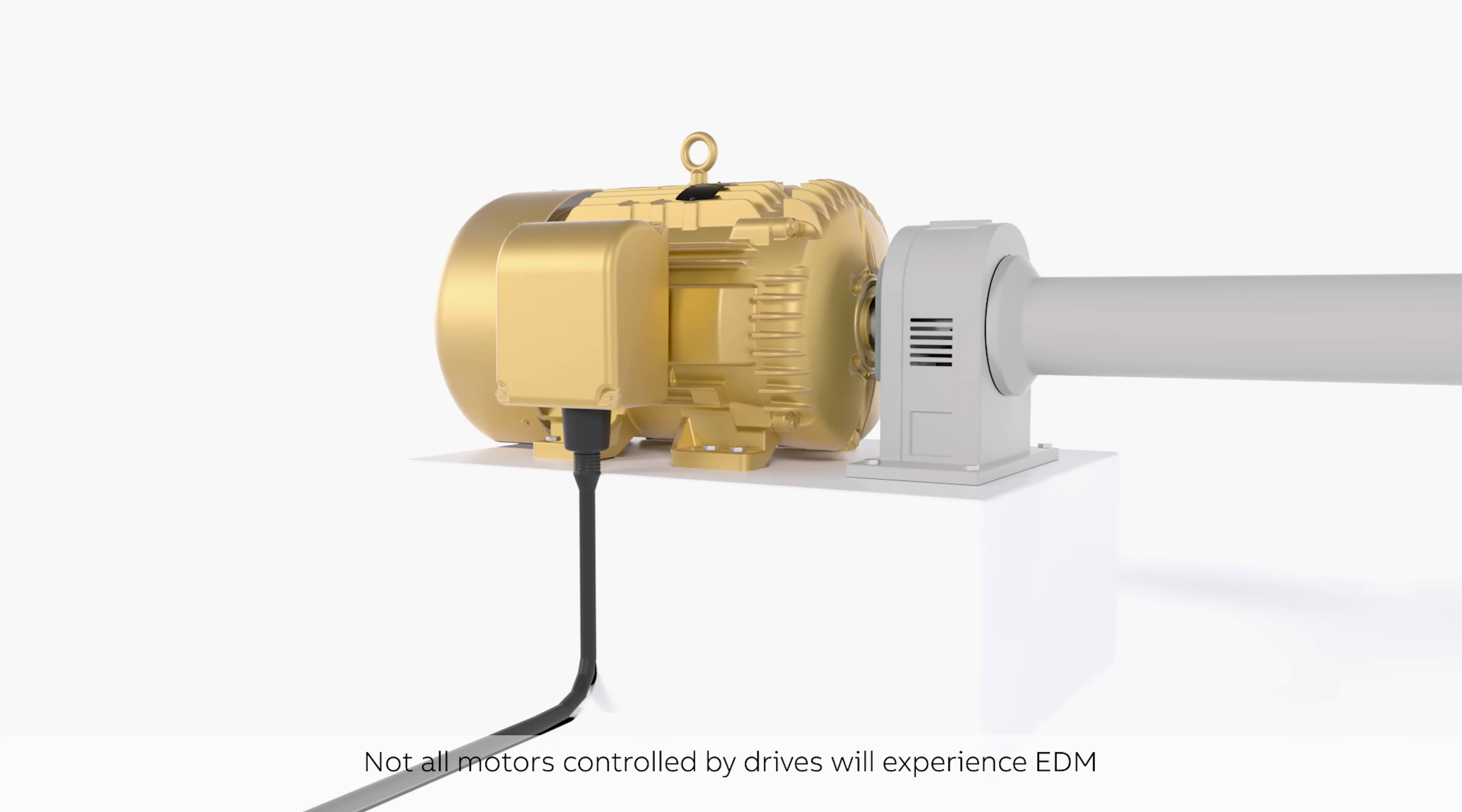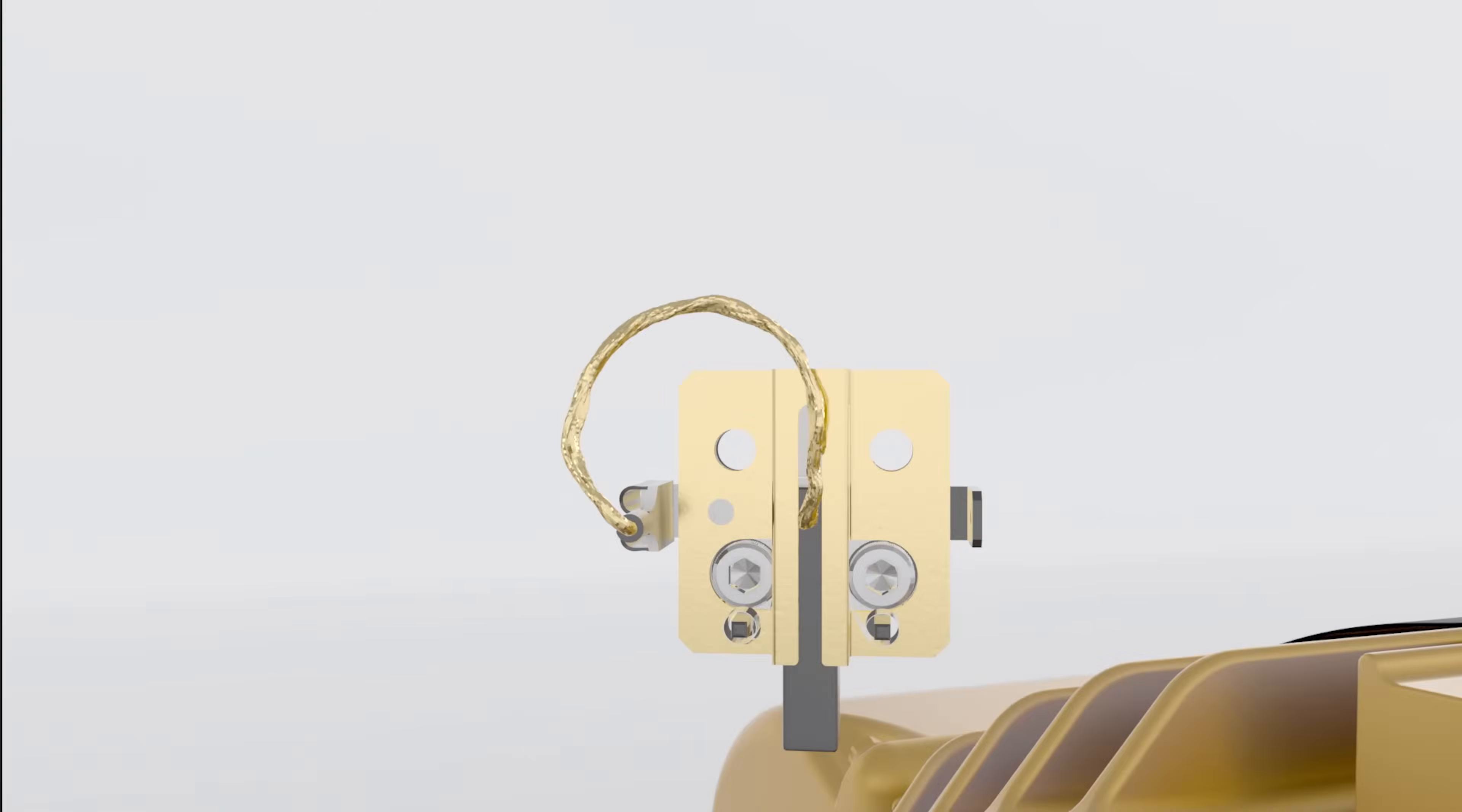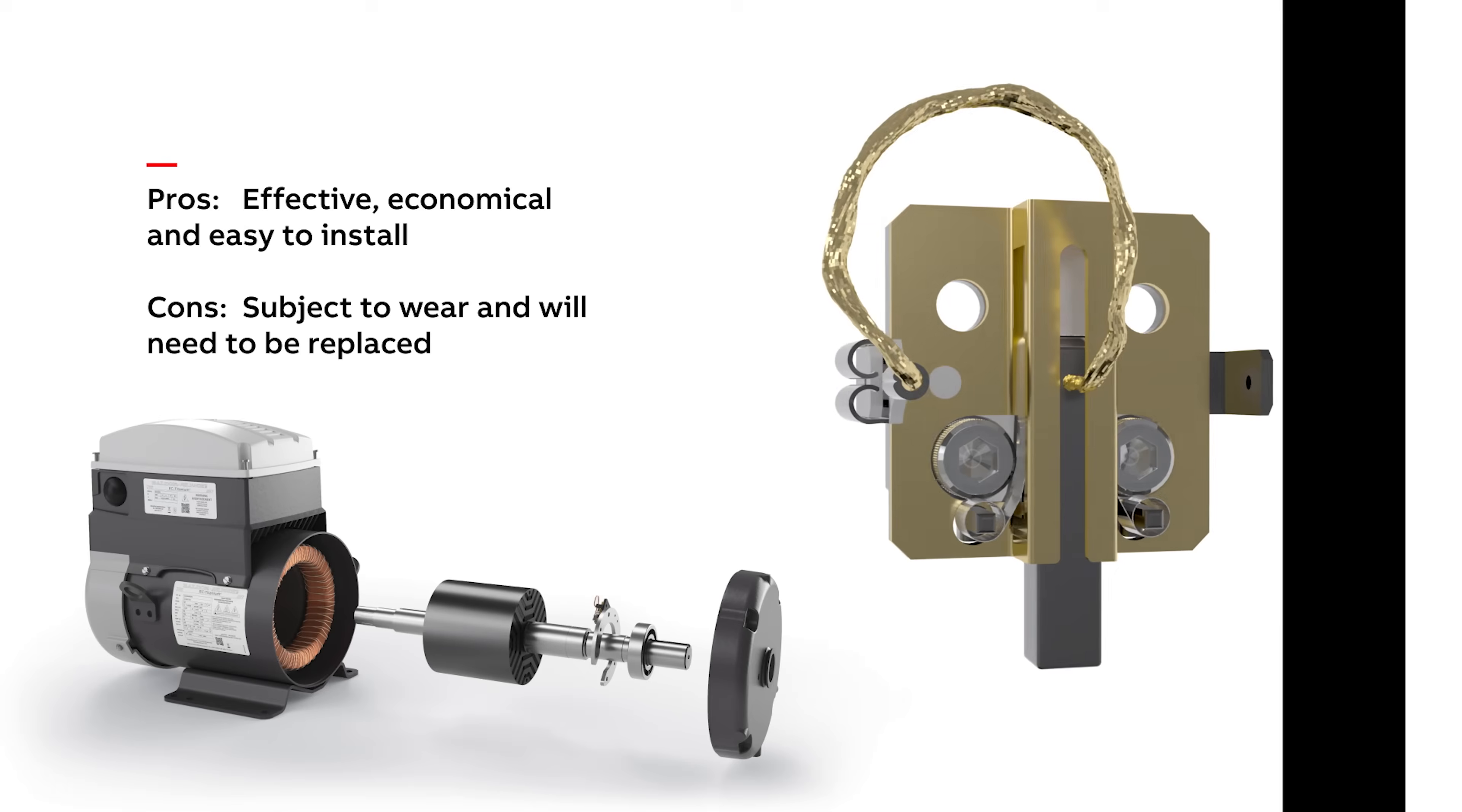Bearing protection from shaft currents can be done in a couple of ways. Shaft grounding brushes, similar to the carbon brushes used on DC motor commutators, have been in use for more than 100 years. Brushes provide a low impedance path from the rotor to ground so that the shaft voltage does not build up to the point where it discharges through the bearings. However, the brushes are subject to wear because of their contact with the shaft and will eventually need to be replaced.